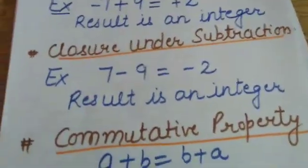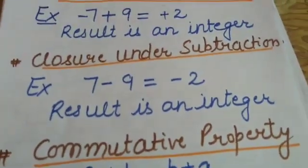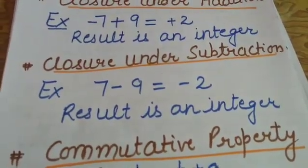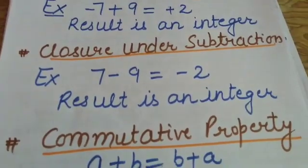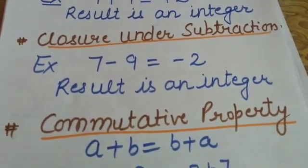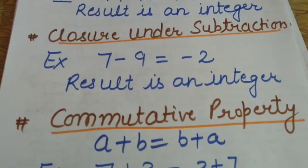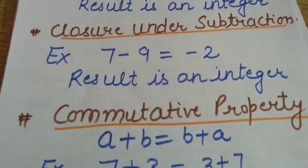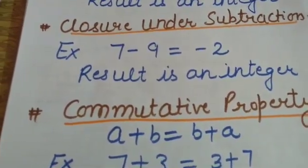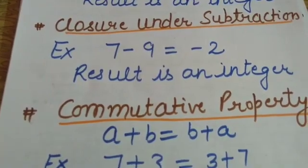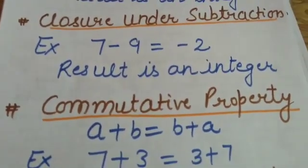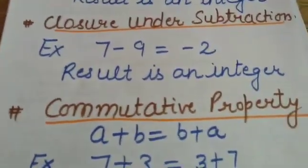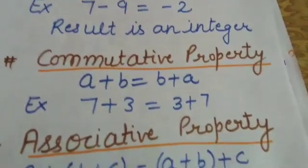The second property is closure under subtraction. It means if you are subtracting any two integers, the result you will get is always an integer. For example, suppose 7 and 9 are two integers and you are subtracting them — the answer is also an integer. So if you subtract two integers you will always get an integer. This is closure under subtraction.